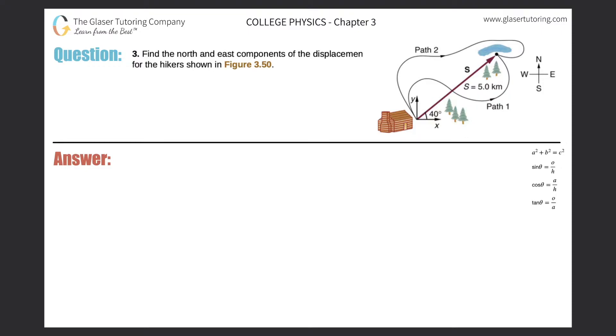Number three: find the north and east components of the displacement for the hiker shown. Okay, looks like we're missing a letter, no big deal. So north and east components of the displacement.